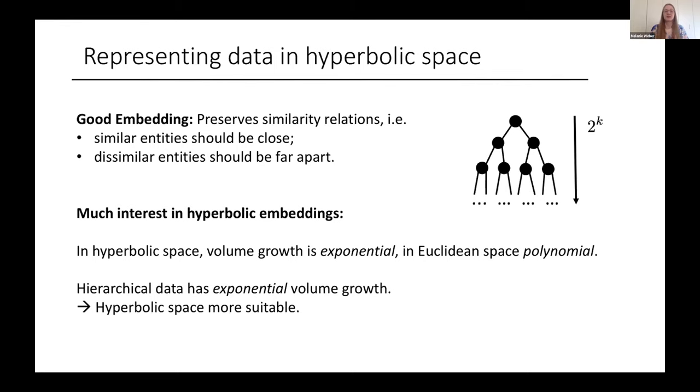One example is if we look at a hierarchical data set, which looks conceptually like the tree we see on the right hand side, and we go down the levels of the tree, the number of vertices that we encounter grows as two to the k. This is evidence of exponential volume growth. If you want to find a good embedding space for a data set with exponential volume growth, hyperbolic space is a good candidate because it has exponential volume growth as opposed to, for example, Euclidean space that only has polynomial volume growth.